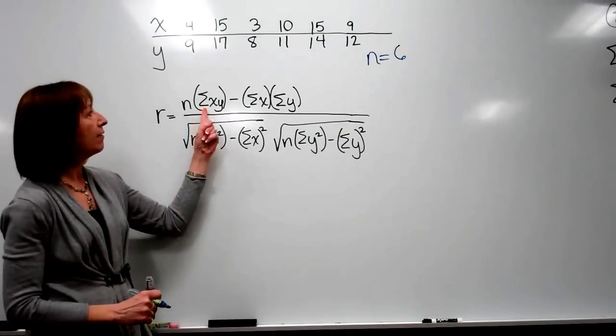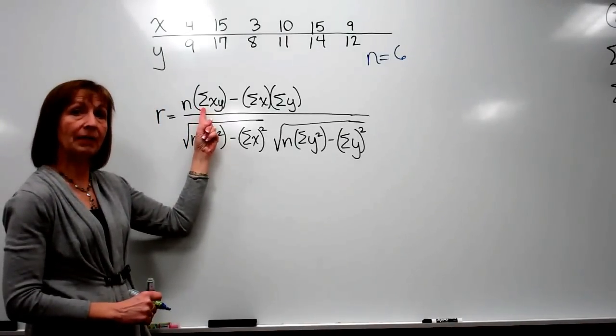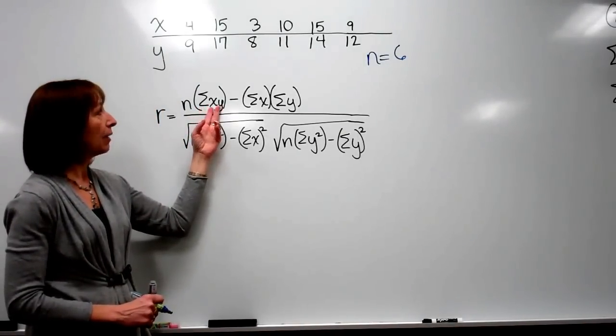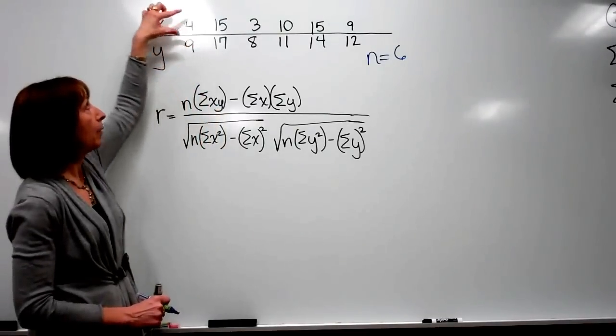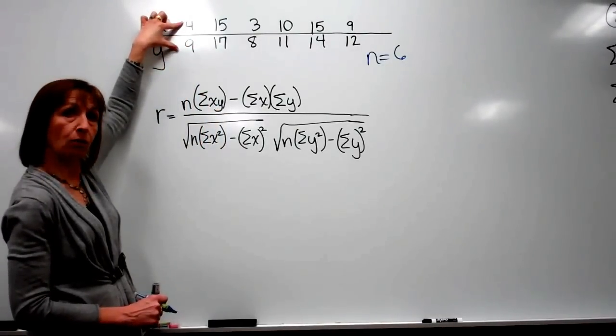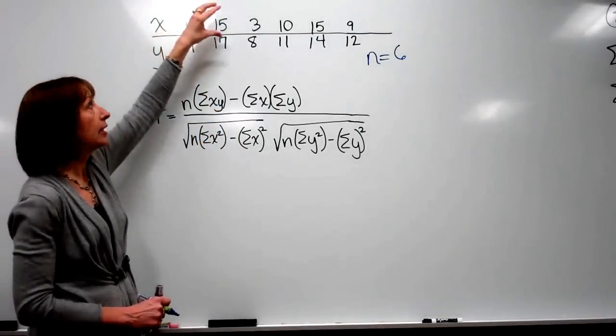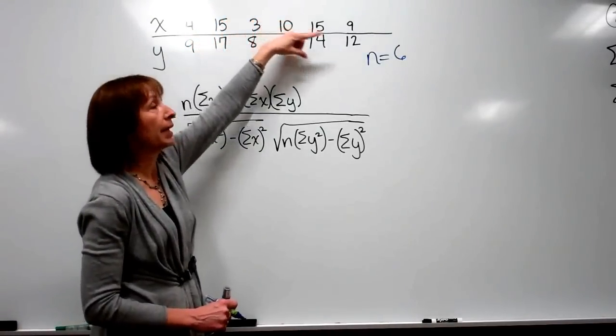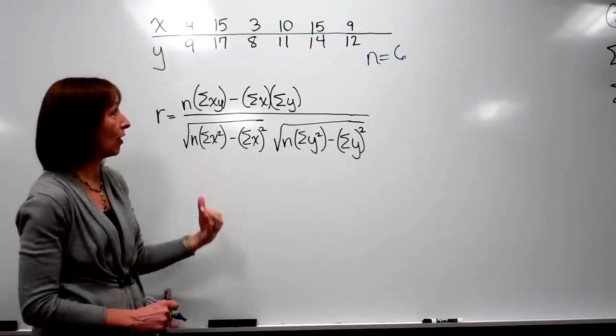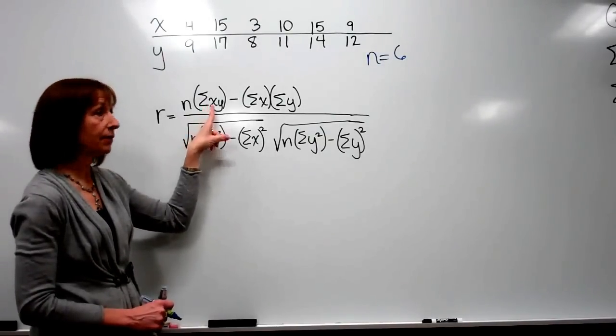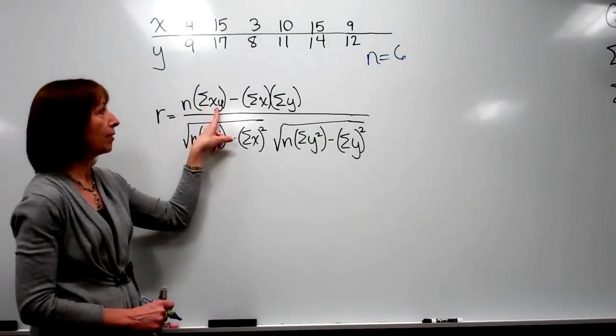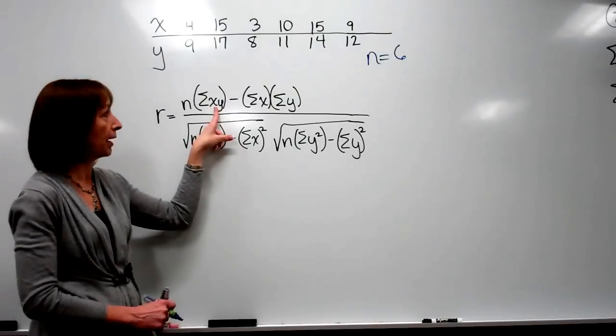Now when we have the capital sigma, that means to add up, and then right after that is the x times y. That means for every ordered pair, I want to take x and multiply it to y, get the product, do that for all the ordered pairs, and then add all of those together. So that capital sigma means to add up, and x times y is add up all the products of x times y within each ordered pair.